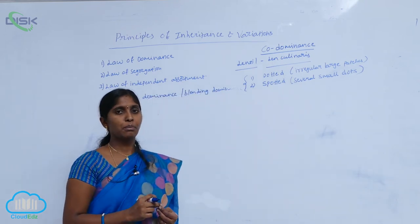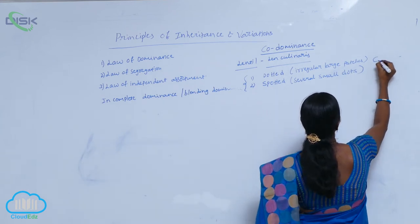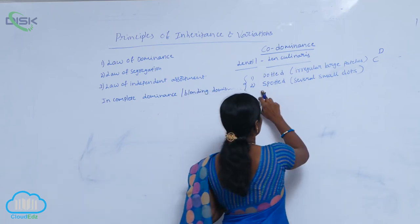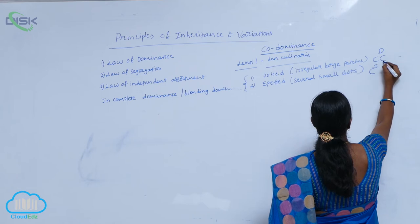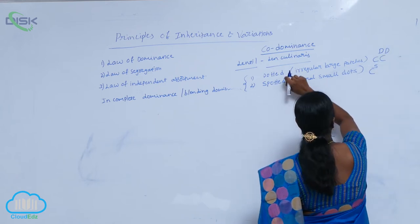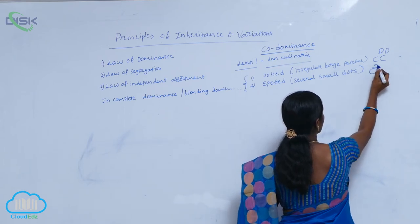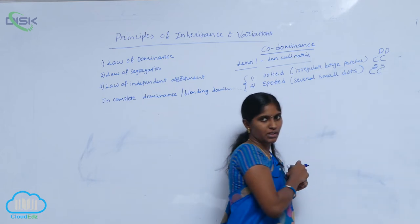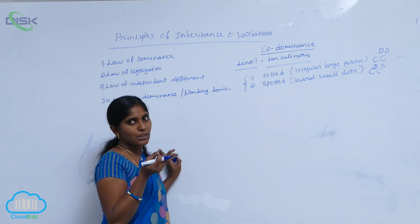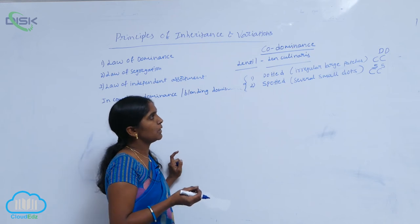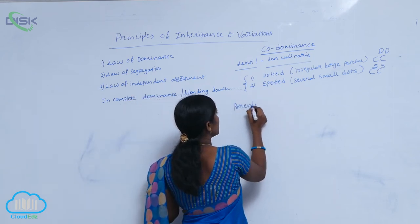In co-dominance, the parents' genotypes are represented as a superscript. For example, dotted is written as C superscript D (C^D), and spotted is written as C superscript S (C^S). When they are homozygous, C represents co-dominance, D indicates the dotted character, and S indicates spotted. So both are homozygous pure lines selected for the cross to explain co-dominance.